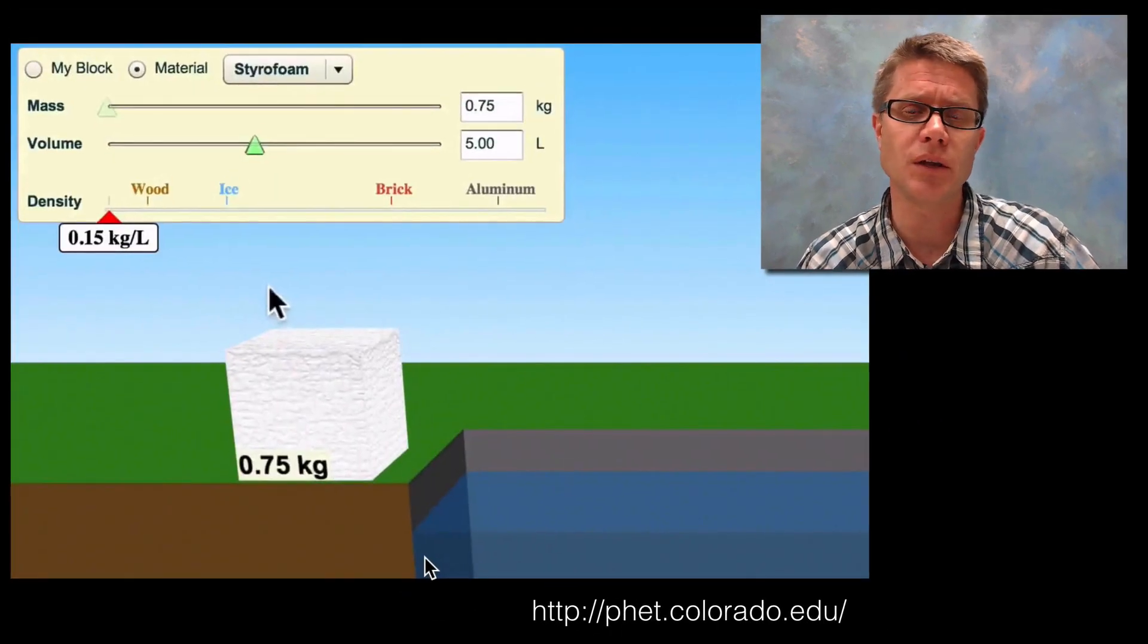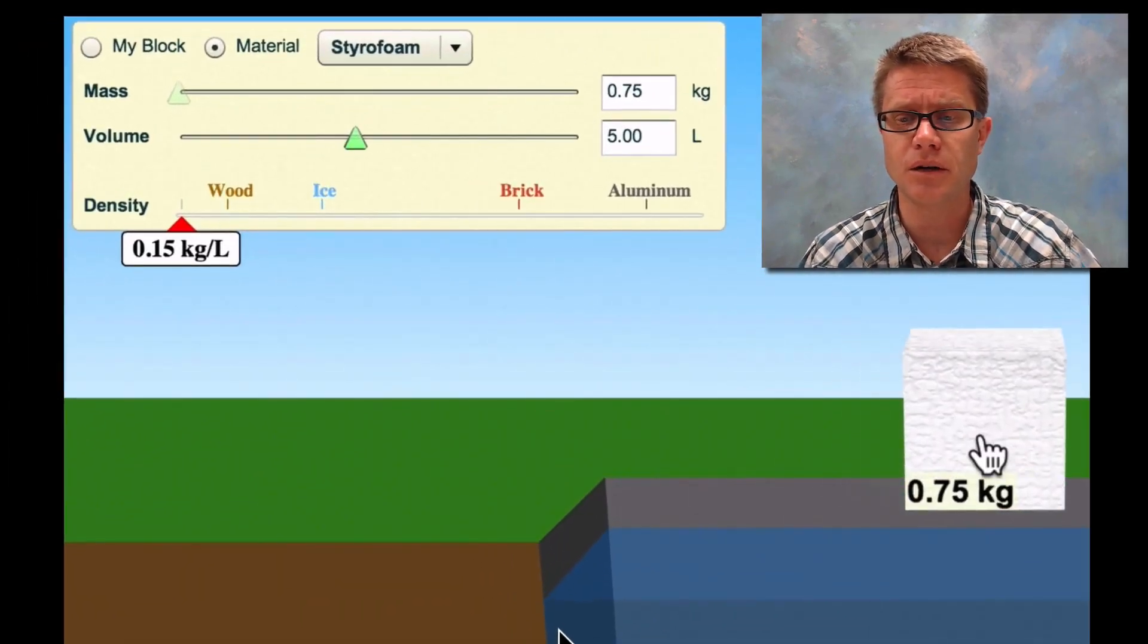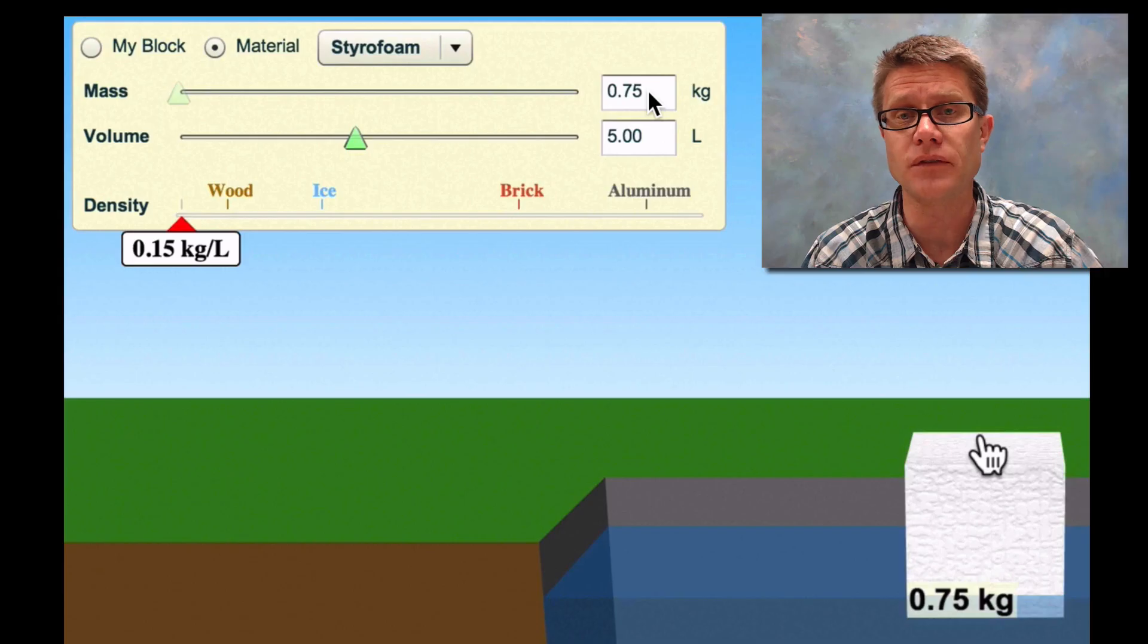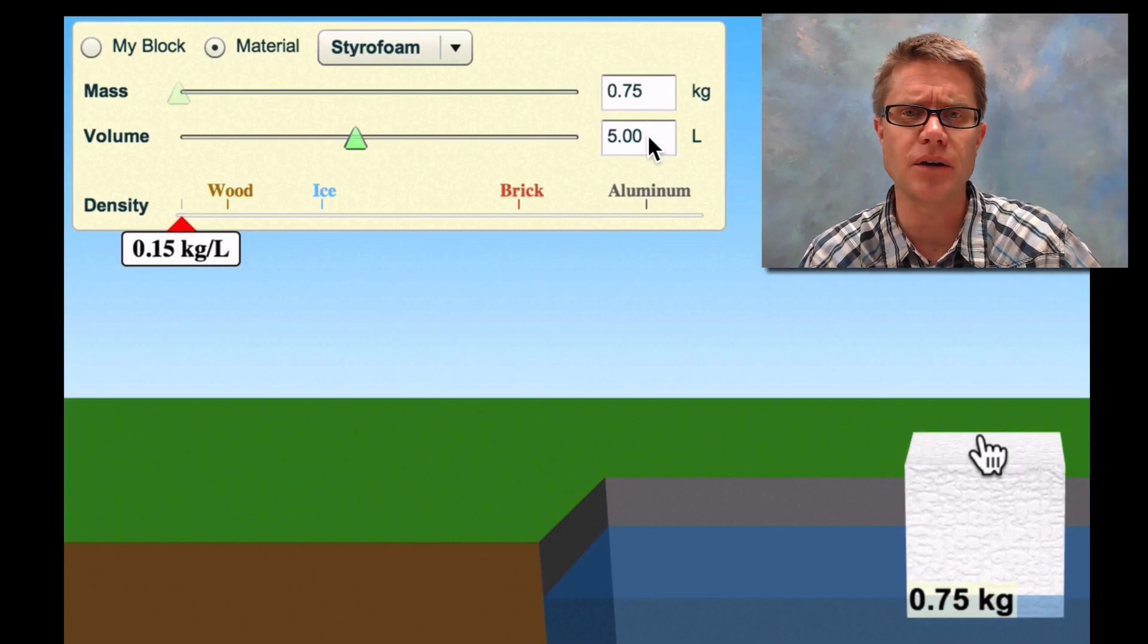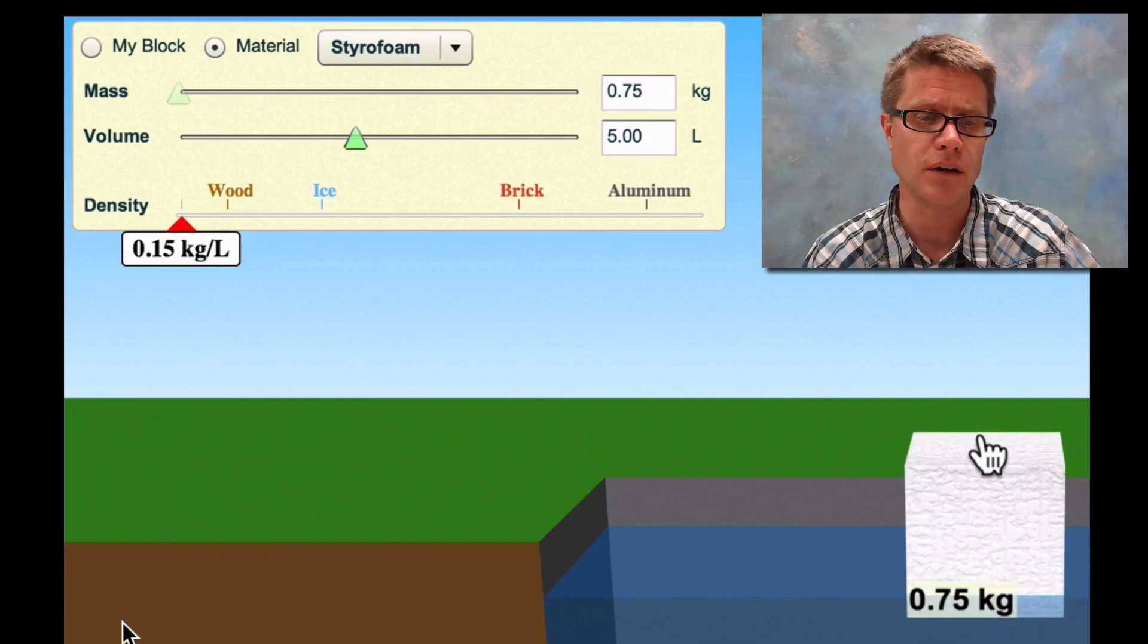This is a PHET simulation. We're going to look at some different objects and figure out what their density is. What we've got here is a little bit of styrofoam. We can see that it has a mass of 0.75 kilograms and a volume of 5 liters. How do you figure out the density? It's simply the mass divided by the volume. You can see the density right here is 0.15 kilograms per liter.